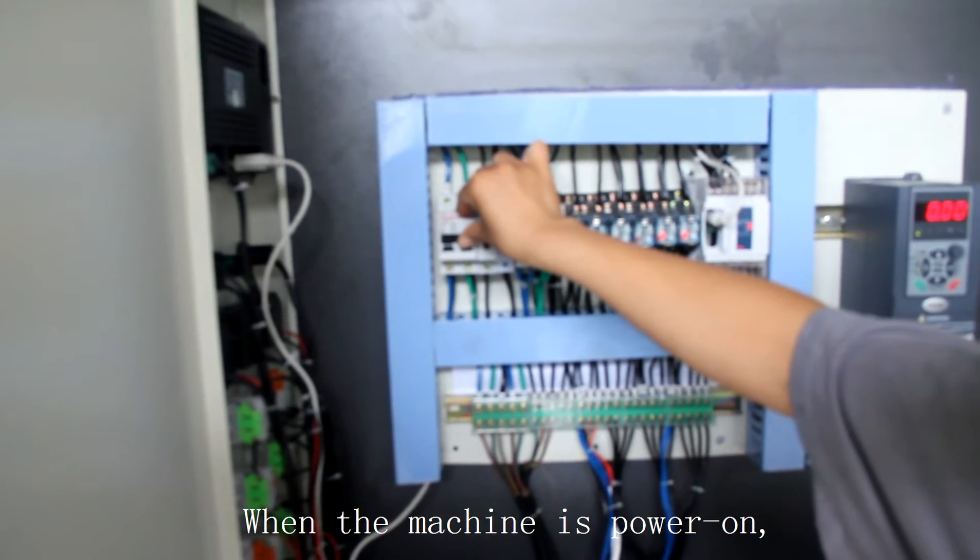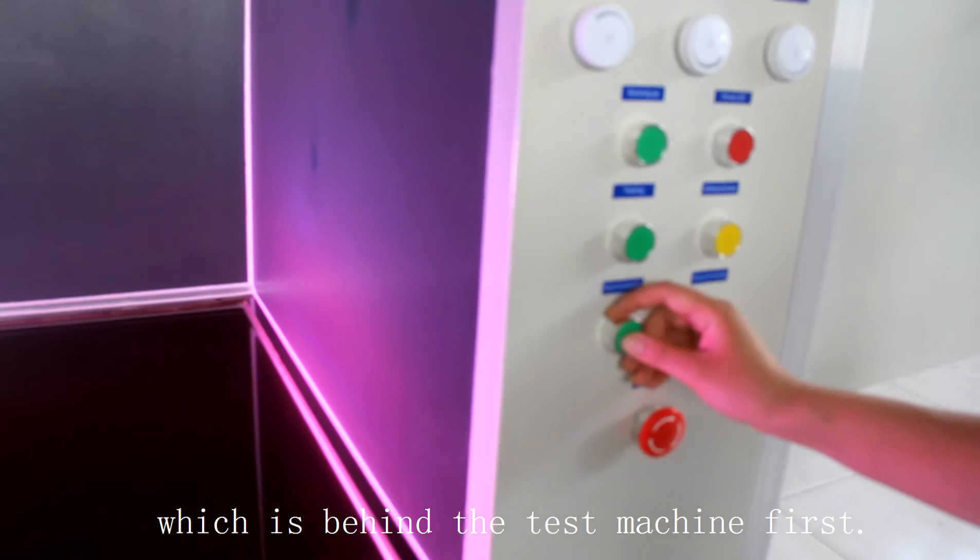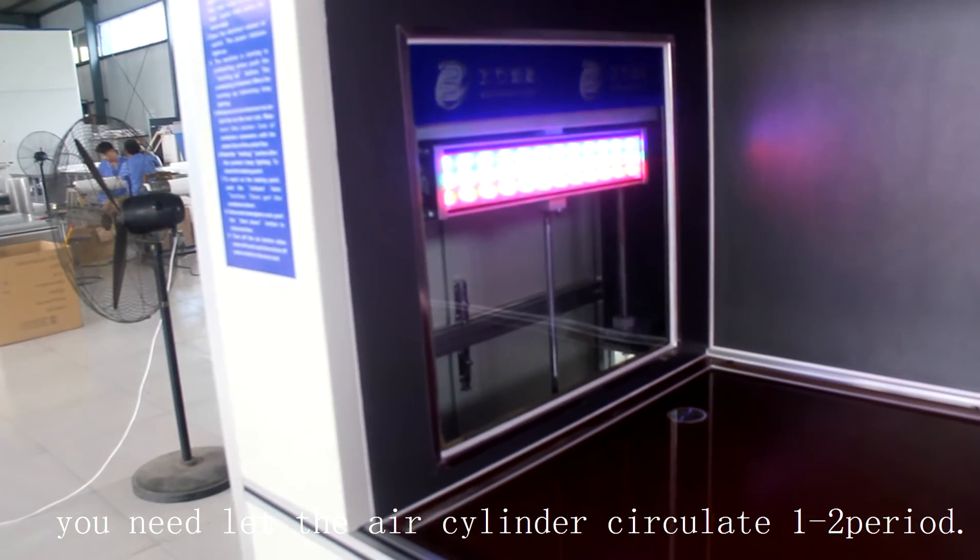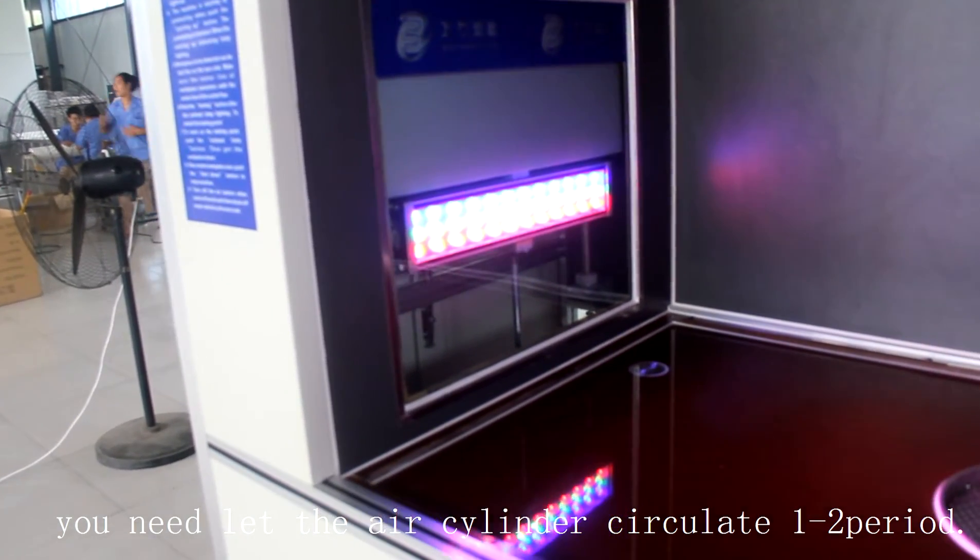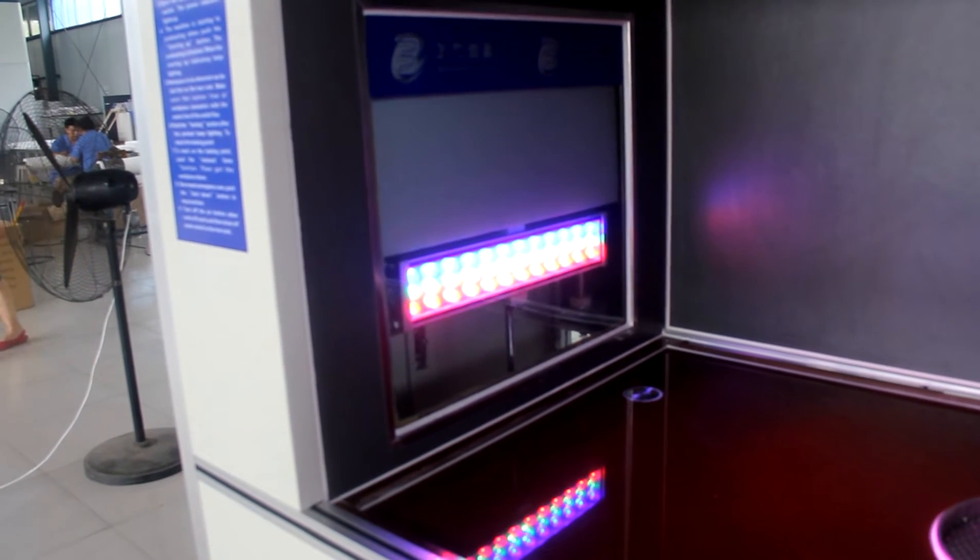When the machine is powered on, don't test first. Don't open the switch which is behind the test machine first. In order to inspect the air cylinder operating conditions, you need the air cylinder to complete 1 to 2 cycles.